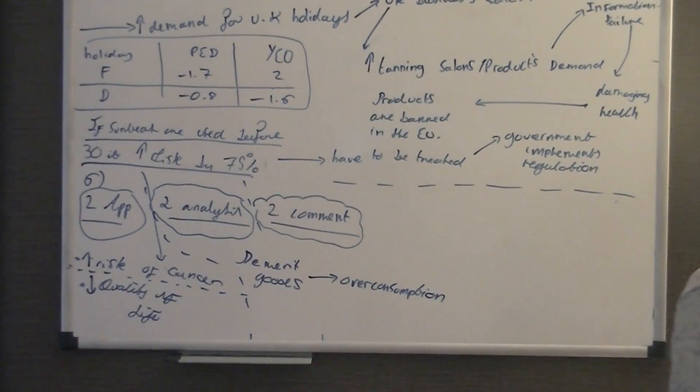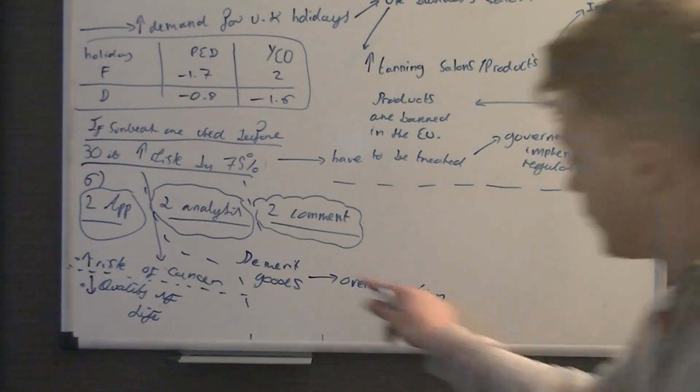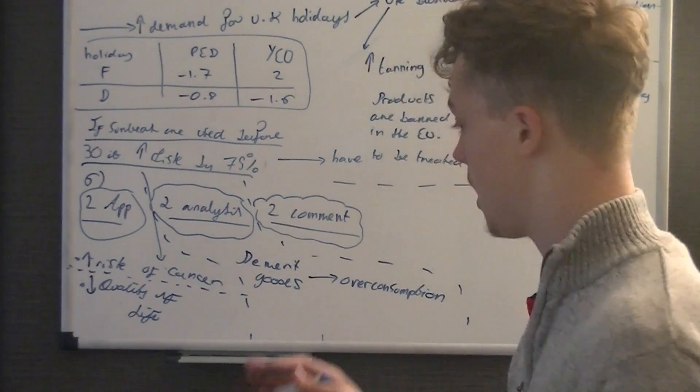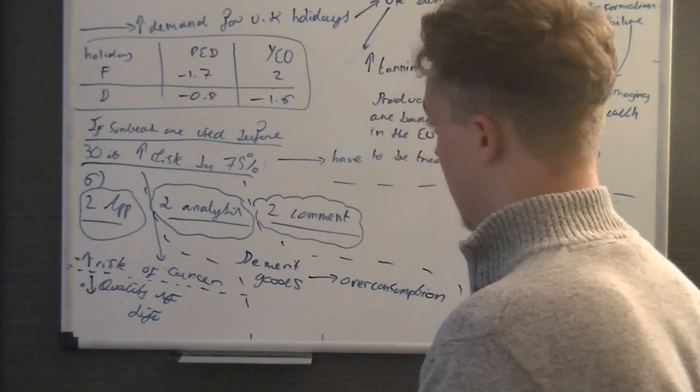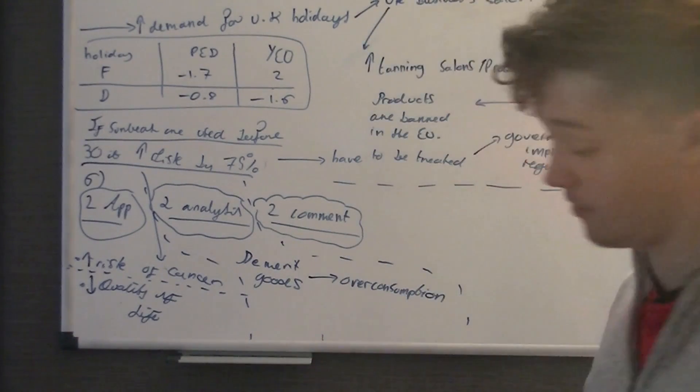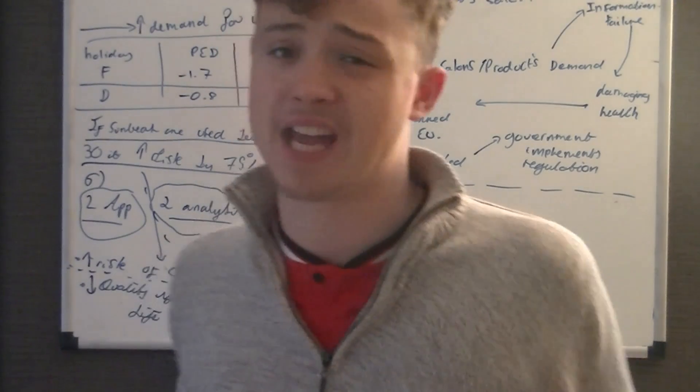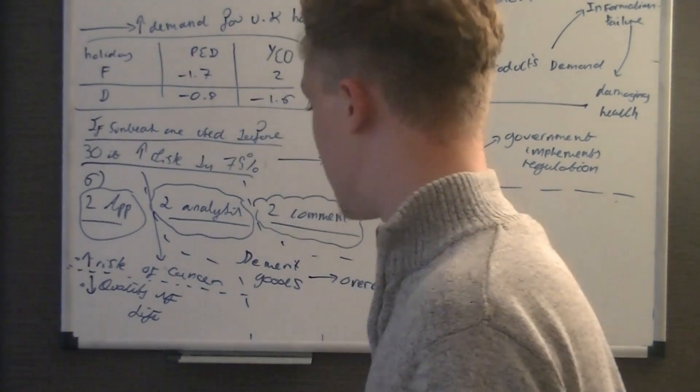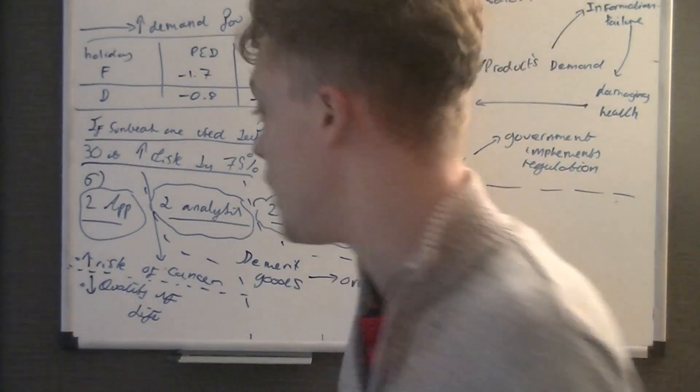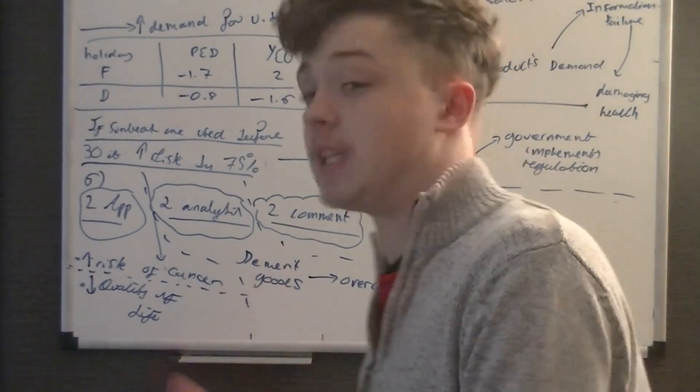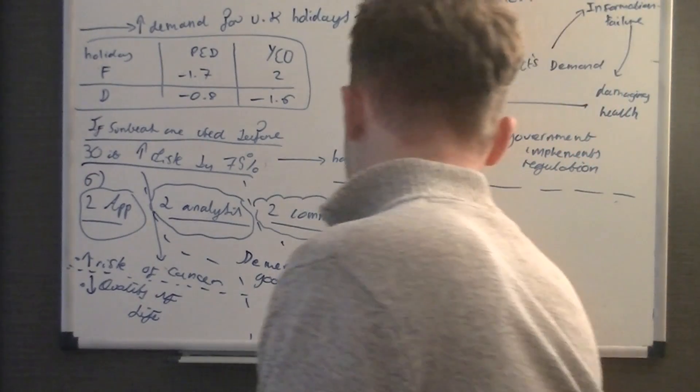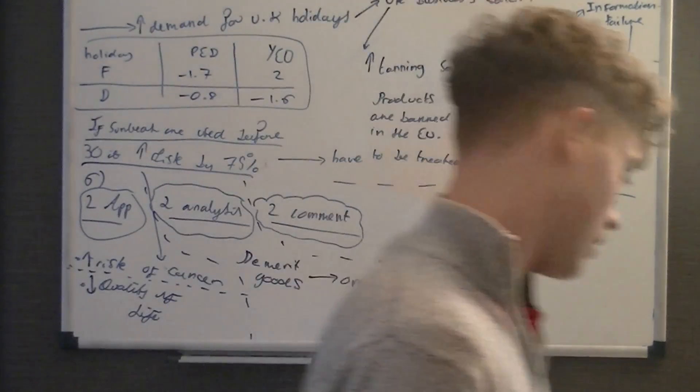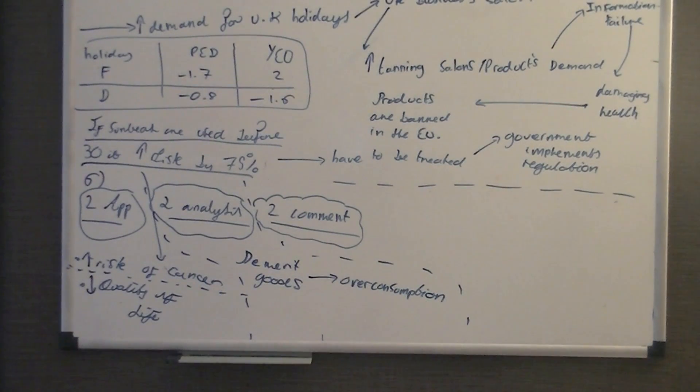So that's one of the things with a demerit good. So you get two marks, one for saying demerit goods, one for saying overconsumption. So we've got two marks for our application, the same as the risk of cancer, which is good if we use this point here. If some better you'll be thought it's 30, increases the risk by 75%, and that says to the examiner yes I've read the case study, give me a mark. Quality of life decreases, demerit goods lead to overconsumption. So this is explaining why people do that.